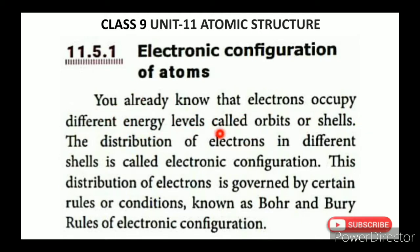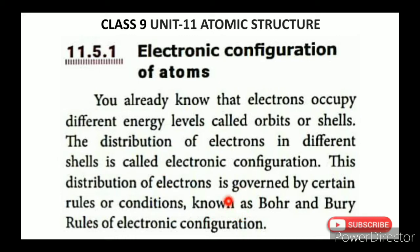You already know that electrons occupy different energy levels called orbits or shells. The distribution of electrons in different shells is called electronic configuration. The distribution of electrons is governed by certain rules or conditions known as Bohr and Bury rules of electronic configuration.